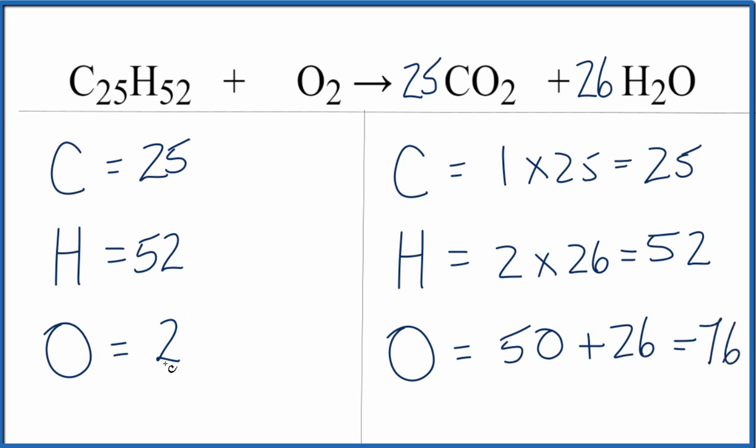We need to have 76 oxygen atoms here on the reactant side for this to balance out. If we can do that, we're done. 2 times something is going to give me 76. 2 times 38 should do it. Let's put a 38 as our coefficient here.